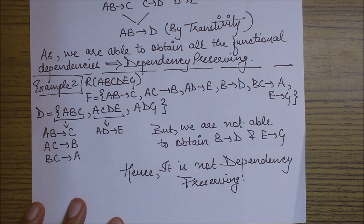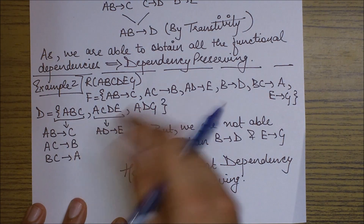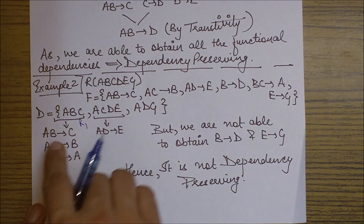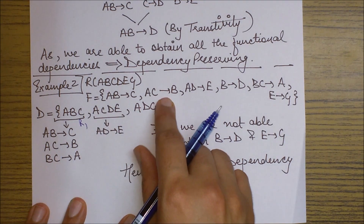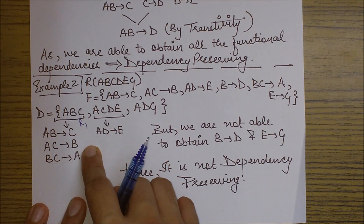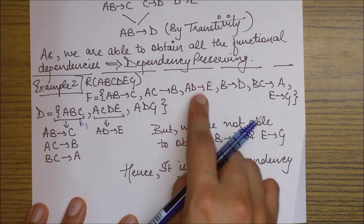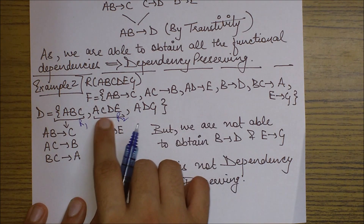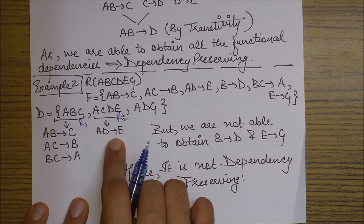I start with the first functional dependency AB goes to C. From the first sub-relation R1 I am able to get AB goes to C. Moving on, AC goes to B — again I can derive AC goes to B from R1. Next, AD goes to E: D is not present in R1, so we try obtaining this from R2. In R2 we have all the attributes A, D, and E present, so AD goes to E is derivable from R2.